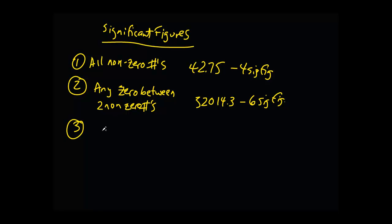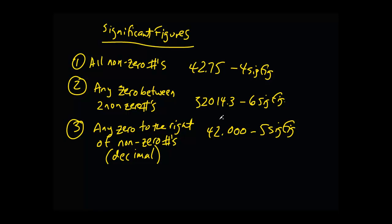The third rule states that it's any zero to the right of some non-zero numbers with a decimal present. This means that the decimal could pretty much be anywhere. So let's say if we had something like 42.000, that means there's five significant figures since these zeros are to the right of non-zero numbers and the decimal is present.